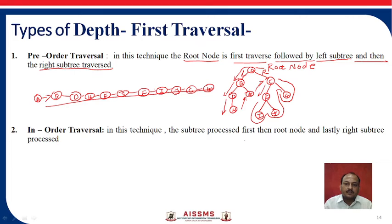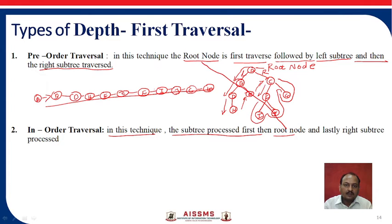Now we will take the same example for in-order traversal. In this technique, the left subtree is processed first, then the root node, then the right subtree. Unlike pre-order where the root node is visited first, in in-order traversal you start from the left subtree before visiting the root.